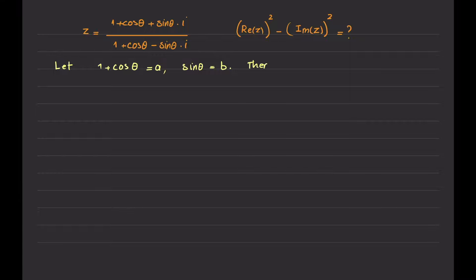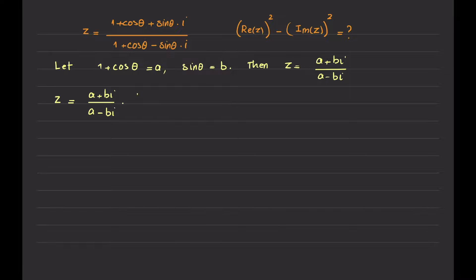Then z becomes equal to A plus B i, over A minus B i. Now the algebra becomes a little bit simpler. The standard trick is to multiply this fraction by the conjugate of the denominator. So I multiply both the numerator and the denominator by the conjugate of the denominator, which in this case is A plus B i.